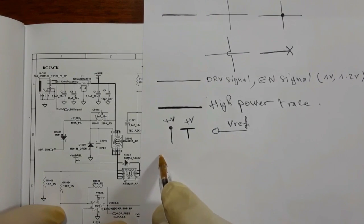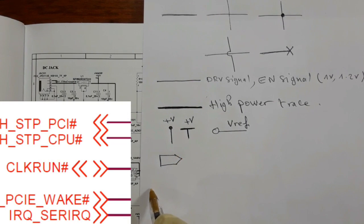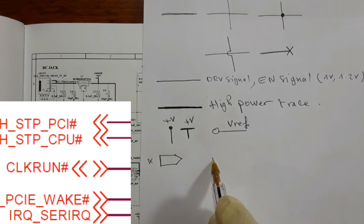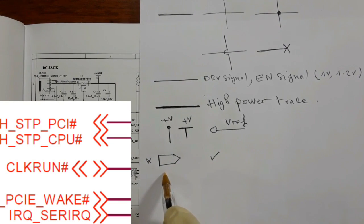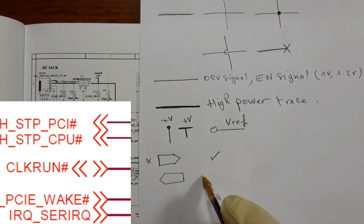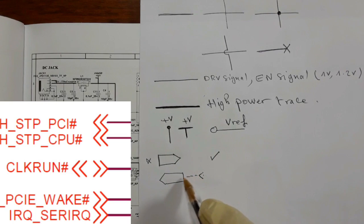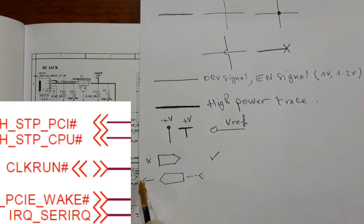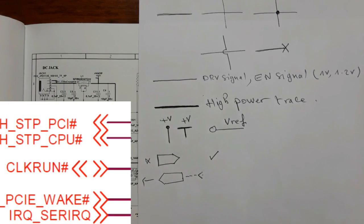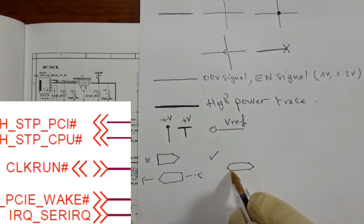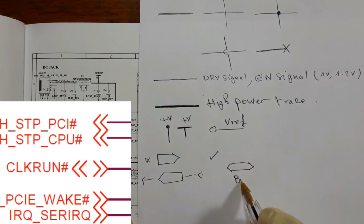For this arrow form, as you can see, the signal goes in this direction — from here to here. And if you find it like this, the opposite direction — from here to here. For example, here we have a chip or a control IC and here we have a MOSFET, so the signal goes from the IC to the MOSFET. But if you find this form, it means it is bidirectional — the signal goes in both directions.